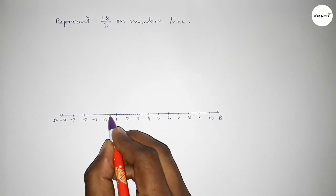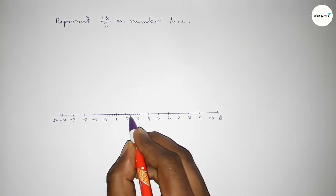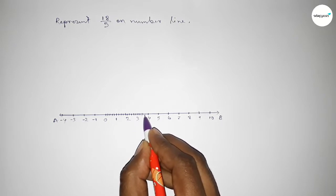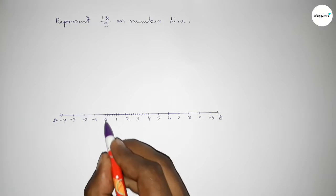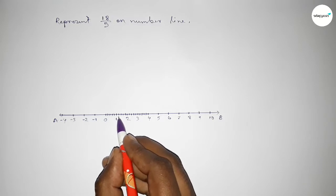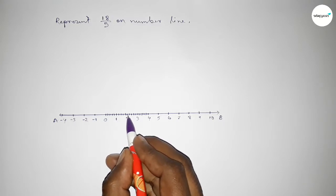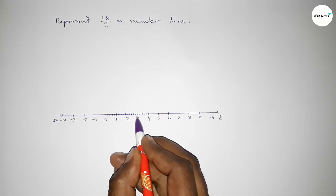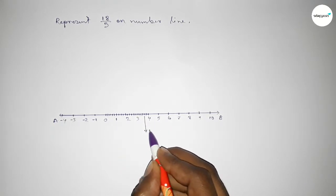Now mark the numbers with deep color to understand perfectly. So first marking the numbers by this way: 1 over 5, 2 over 5, 3 over 5, 4 over 5, 5 over 5, 6 over 5, 7 over 5, 8 over 5, 9 over 5, 10 over 5, 11 over 5, 12 over 5, 13 over 5, 14 over 5, 15 over 5, 16 over 5, 17 over 5, and this is 18 over 5.